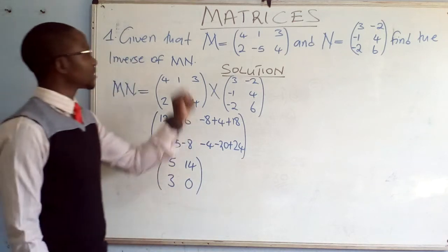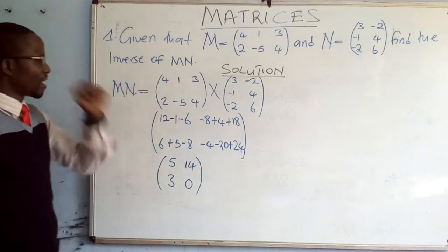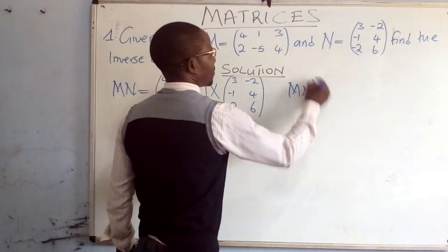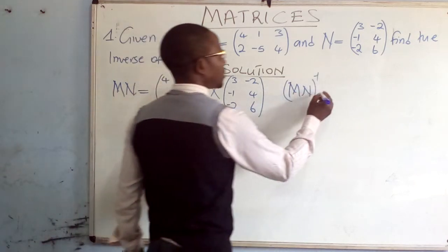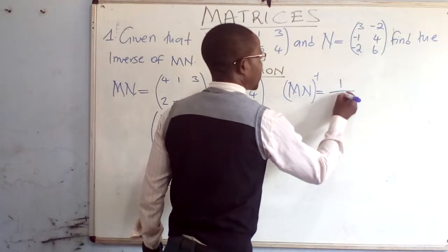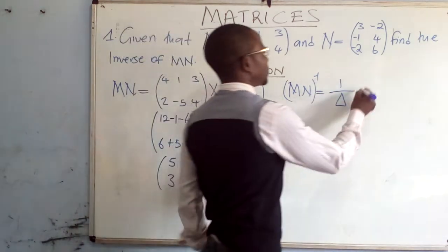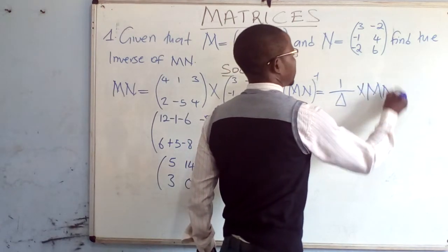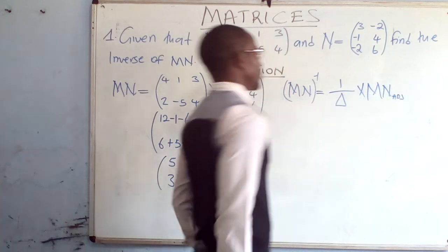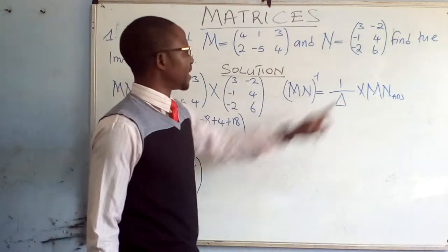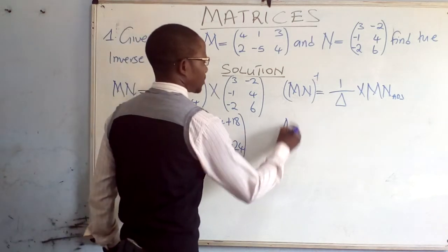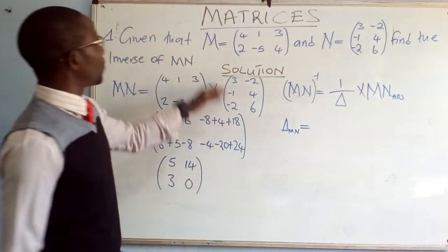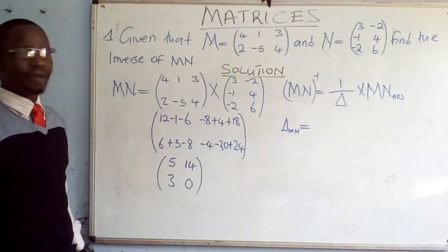Now we are asked to find the inverse of MN. The formula for the inverse of a matrix MN, denoted (MN)⁻¹, is equal to 1 over the determinant times the adjoint of MN. So first of all, we find the determinant. The determinant of MN is going to be equal to the product of the major diagonal minus the product of the minor diagonal.